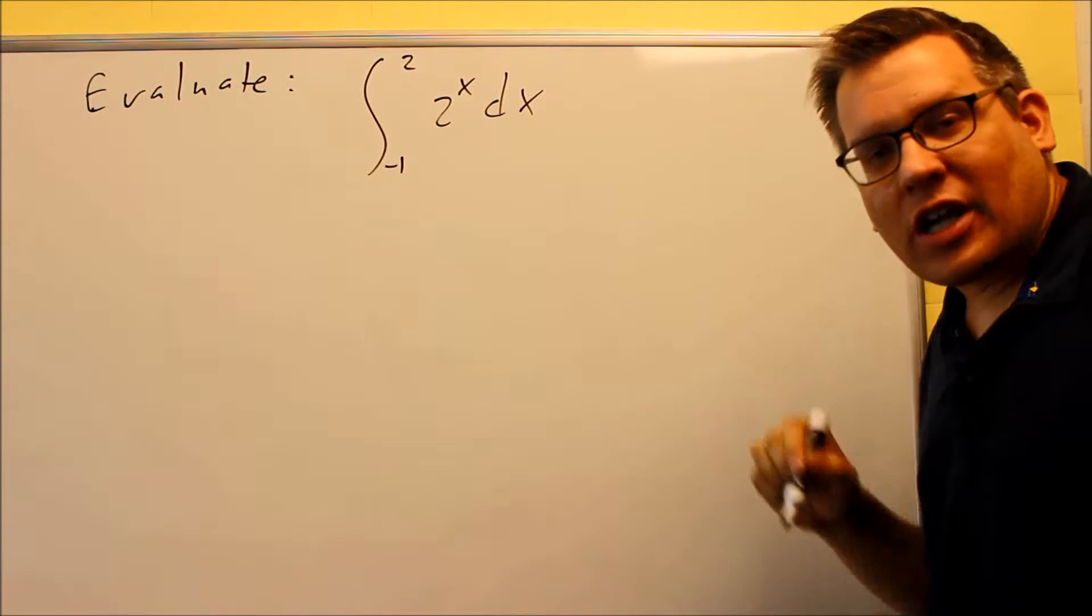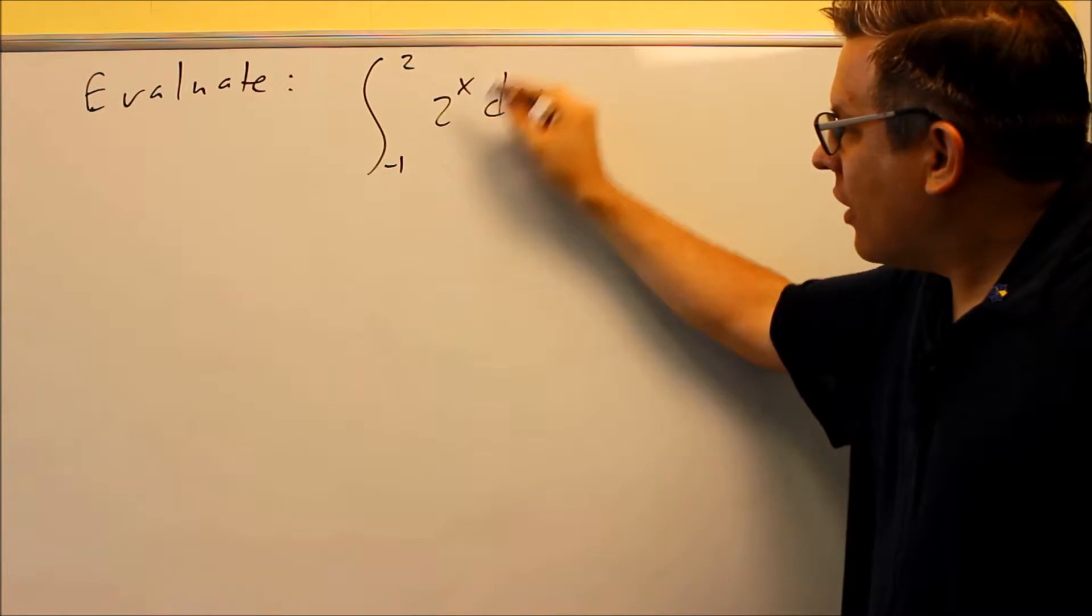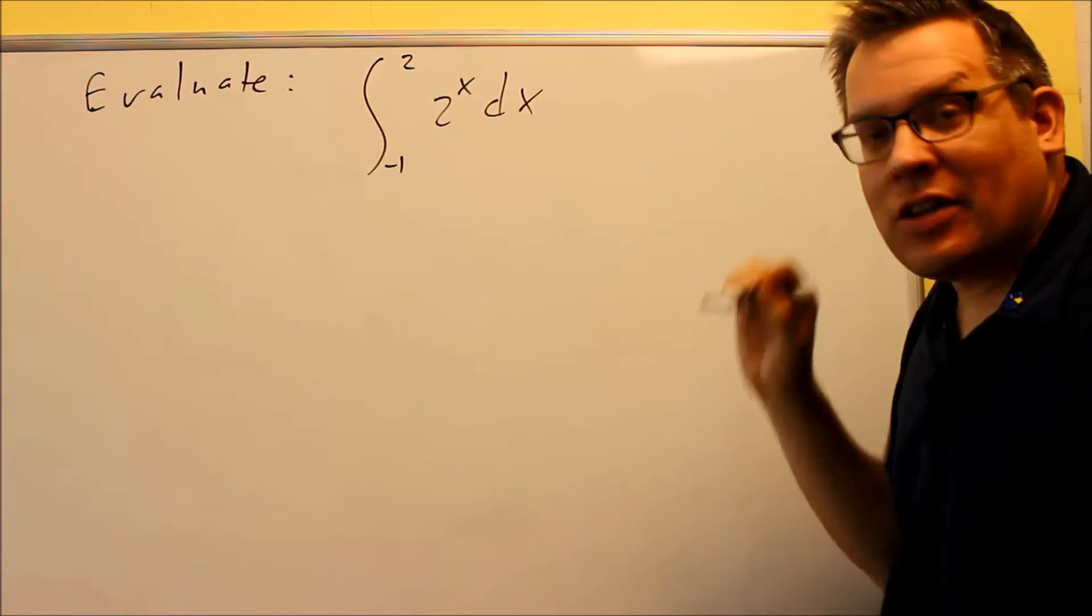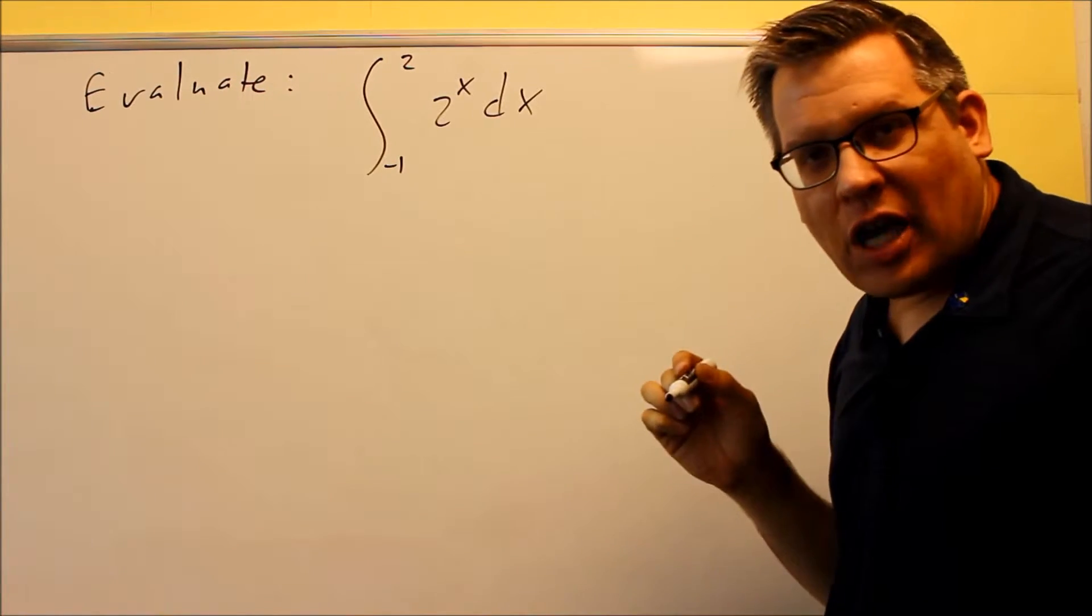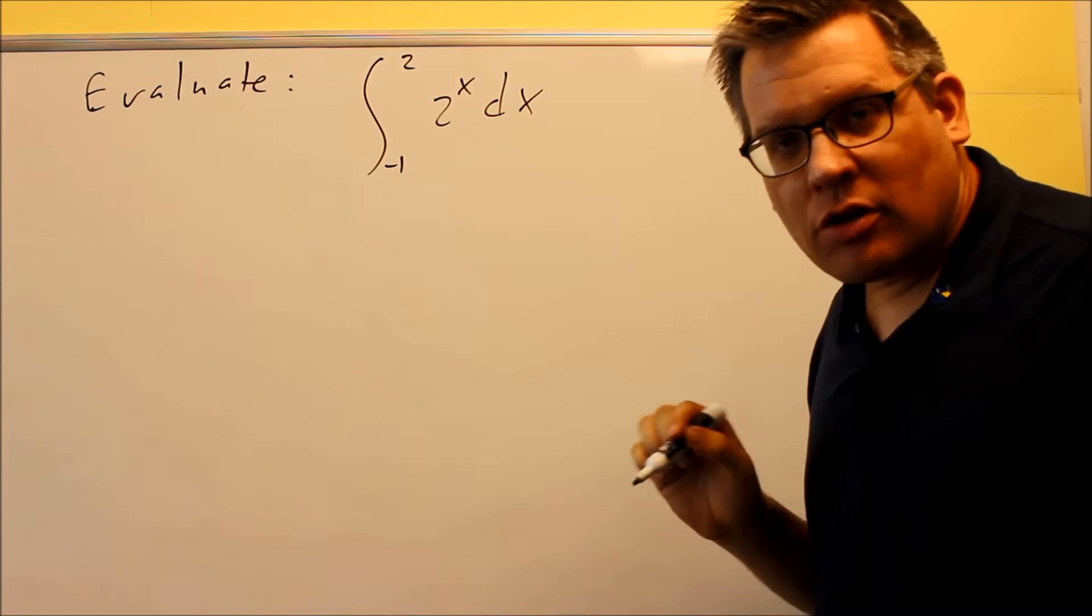The formula is 1 over k ln of a and then times a to the x. So in this case, our 1 in front of the x there, that's your k value. Your a value is 2 here.